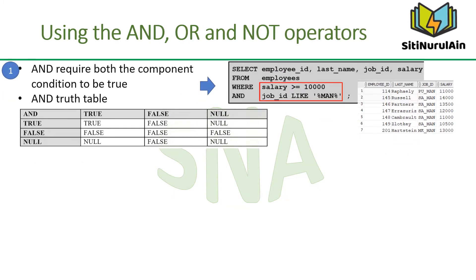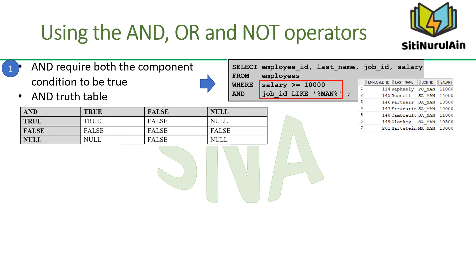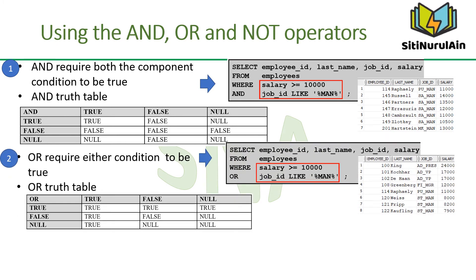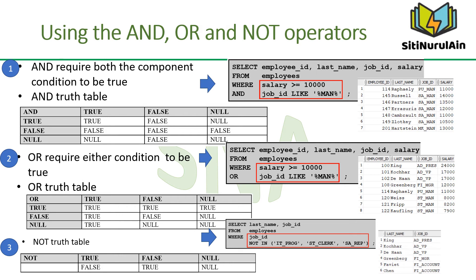The first example shows SQL using the AND operator — both component conditions must be true for any record to be selected. Therefore, only those employees who have a job title containing the string 'man' and earn $10,000 or more are selected. The second example uses the OR operator, where either component condition can be true for any record to be selected. The third example uses the NOT operator, displaying the last name and job ID of all employees whose job ID is NOT programmer, stock clerk, or sales representative.